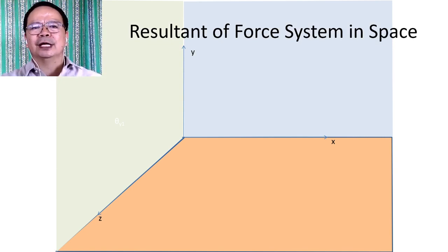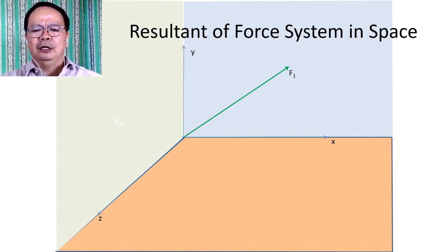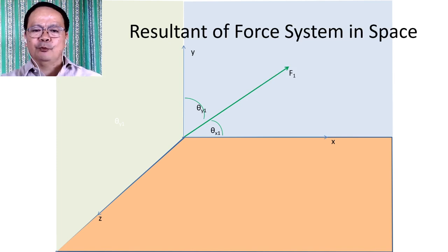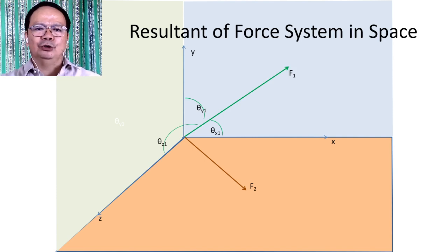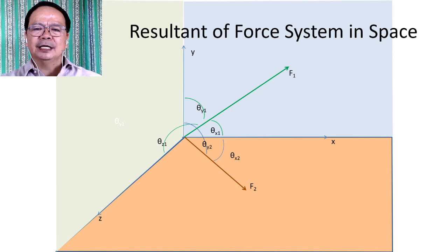On this plane there lies concurrent forces having F₁ as the magnitude, whose direction is indicated by the angles it makes with respect to the three mutually perpendicular axes as θx₁, θy₁, and θz₁. Another force has a magnitude whose direction is indicated by the angles it makes with respect to the positive x, y, and z axes as θx₂, θy₂, and θz₂.